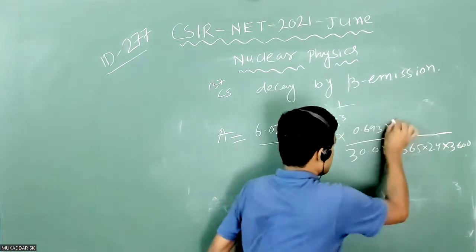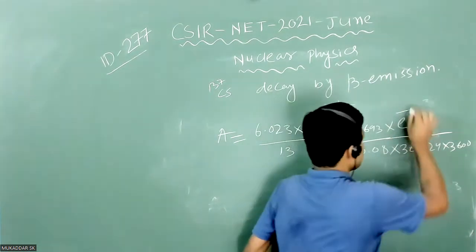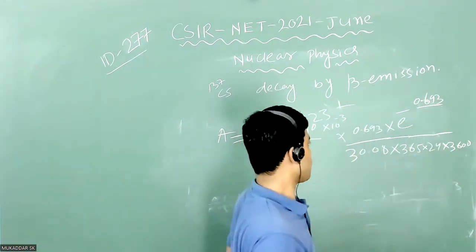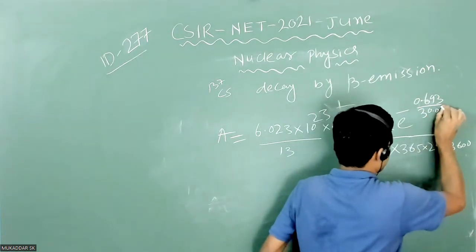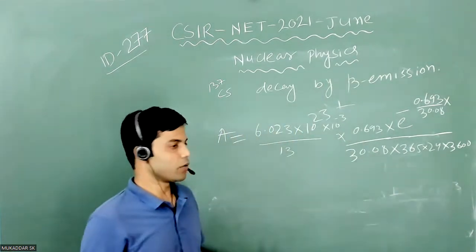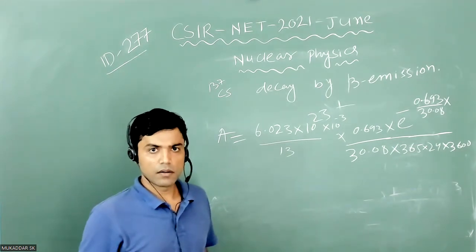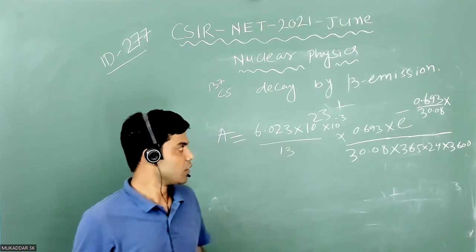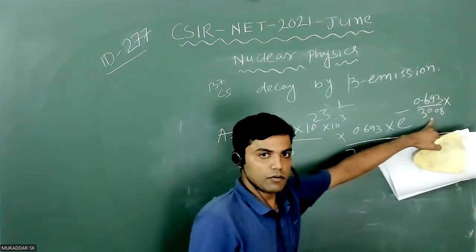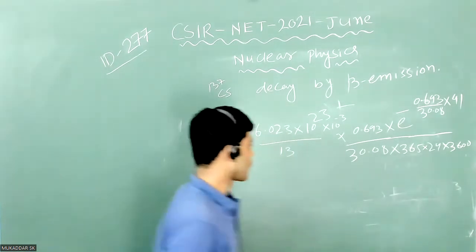Then we have the exponential term e⁻λt where λ = 0.693/30.08 and t is the time interval. The sample was prepared on 1st January 1980 and activity is measured on 1st January 2021, so t = 41 years.